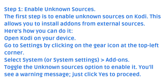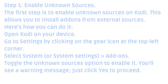Step 1: Enable Unknown Sources. The first step is to enable unknown sources on Kodi. This allows you to install add-ons from external sources. Open Kodi on your device, go to Settings by clicking on the gear icon at the top left corner, select System Add-ons, and toggle the Unknown Sources option to enable it. You'll see a warning message — just click Yes to proceed.